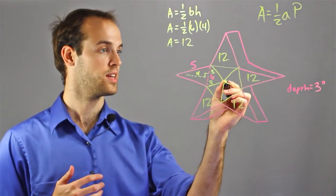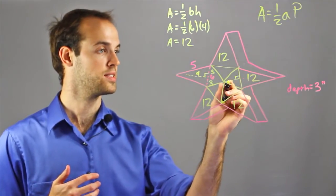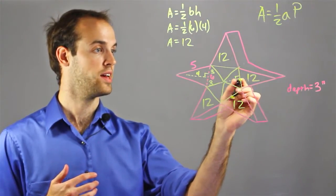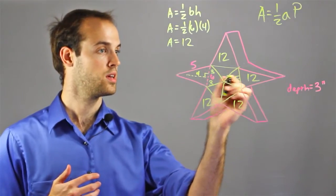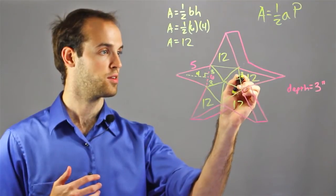I'm going to draw the apothem just like this, which cuts this triangle into two equivalent triangles. I know that this base is six, which means this base has to be six, which means this side right here is three.